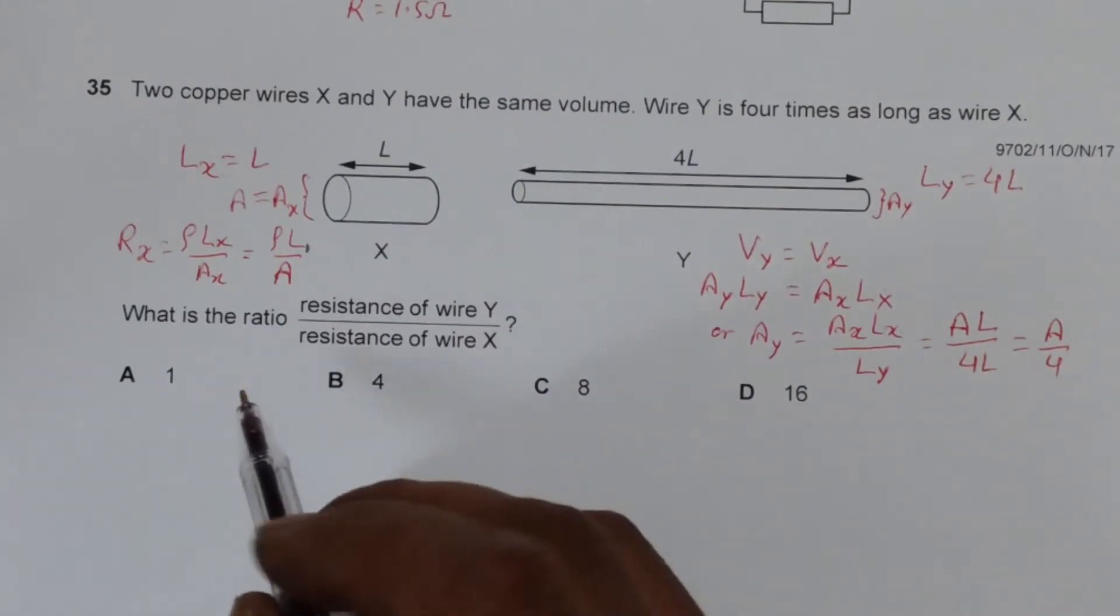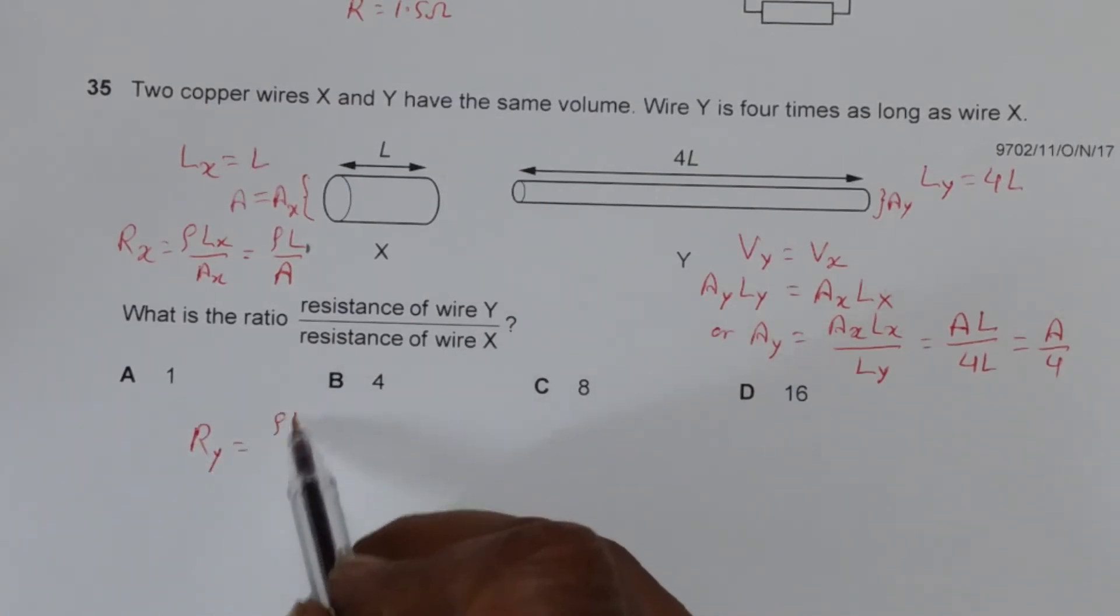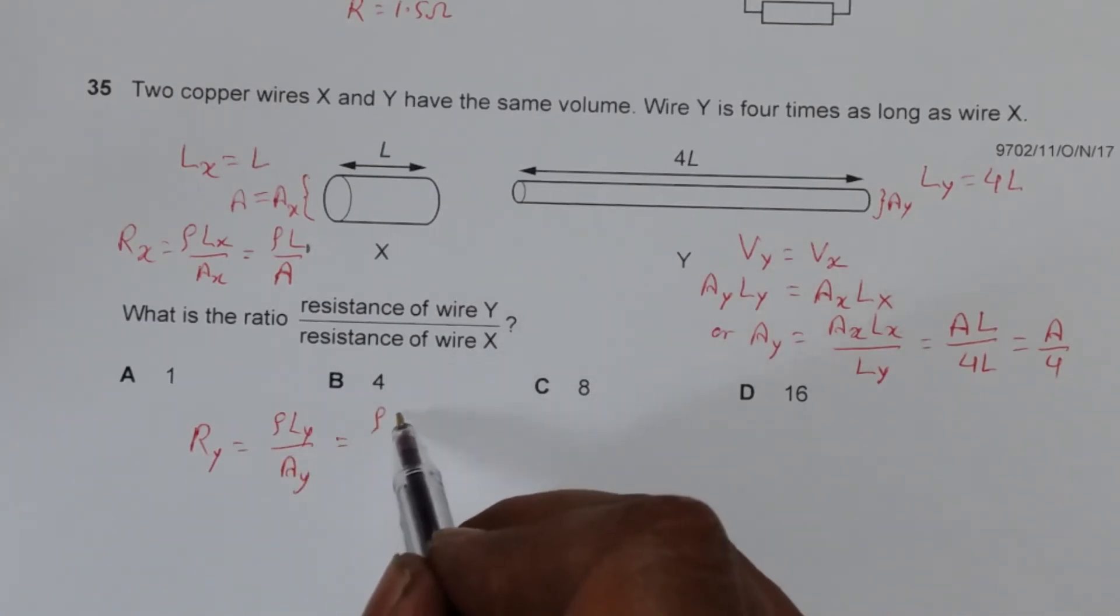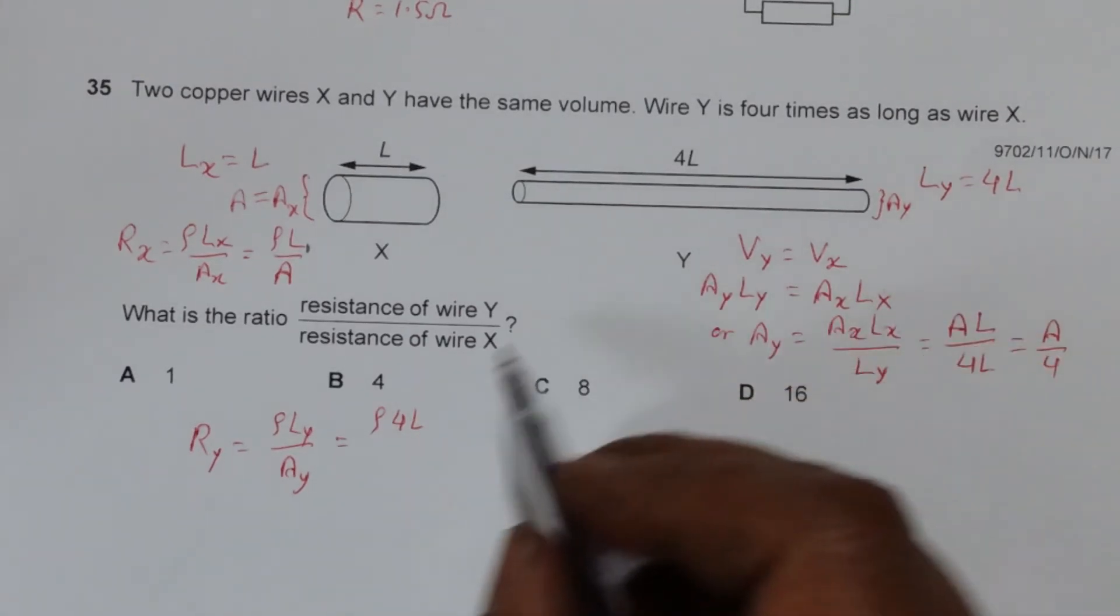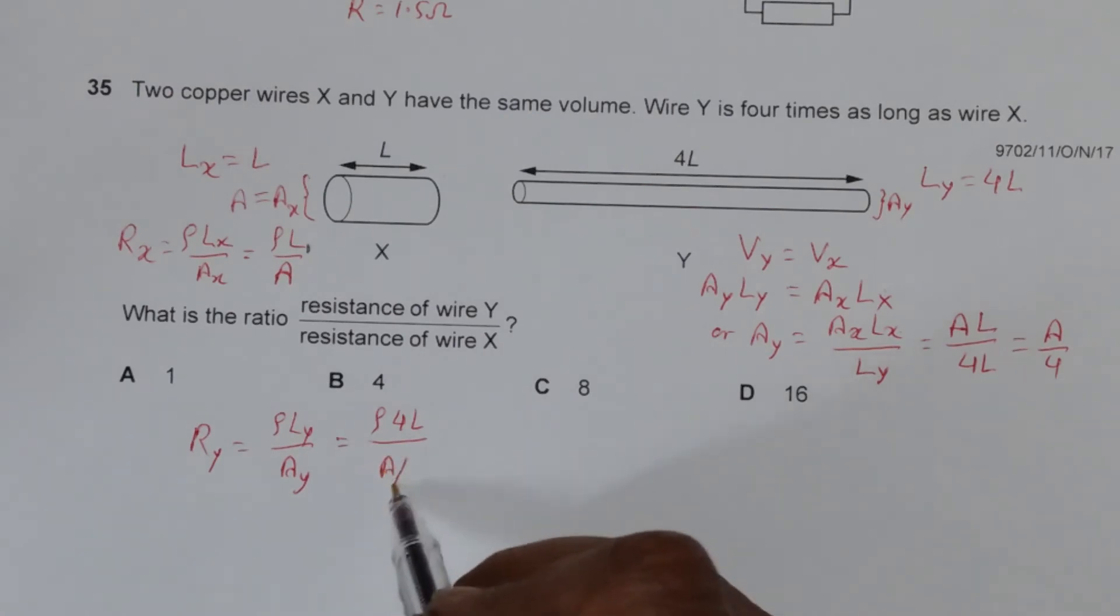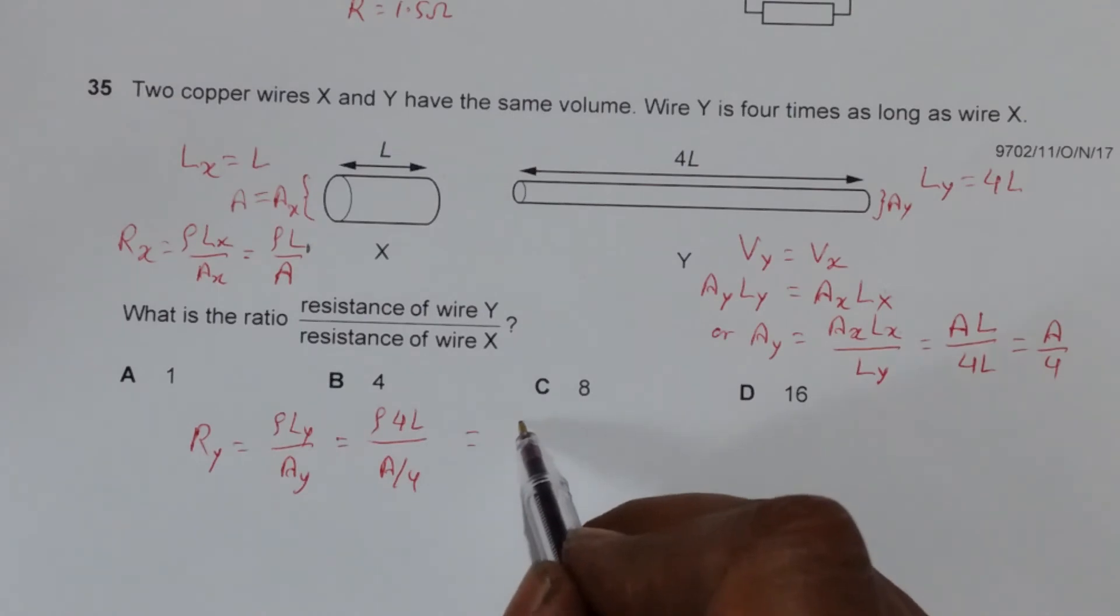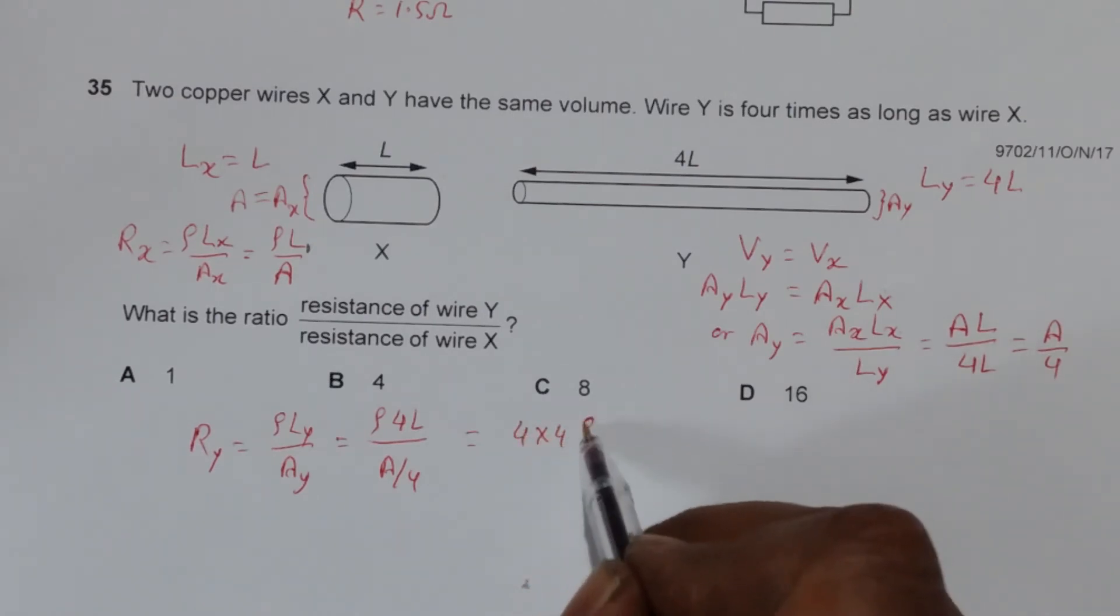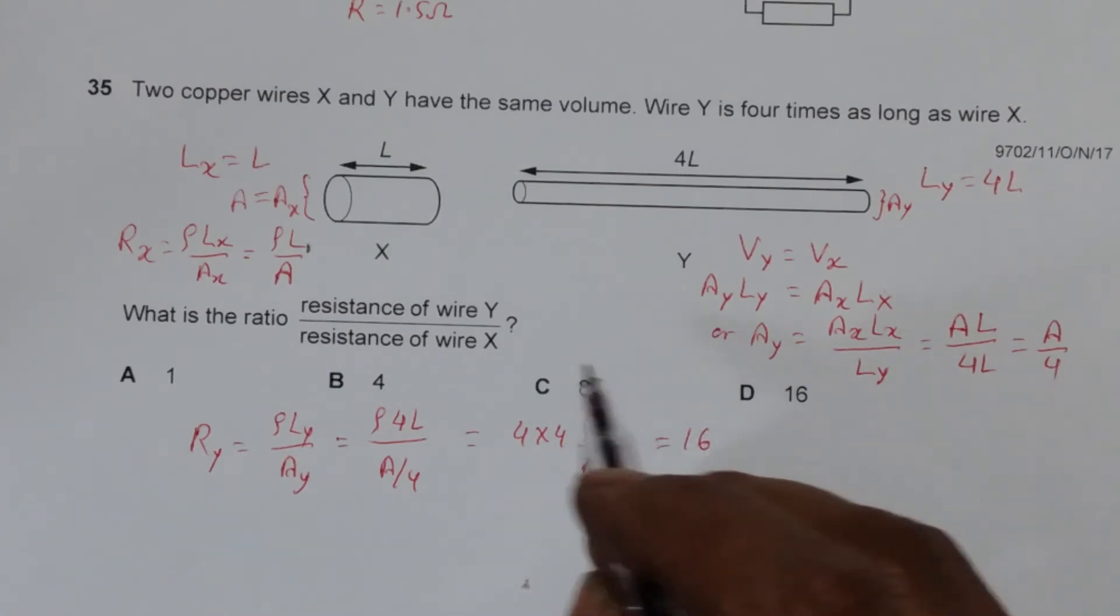Now let's find R_Y. It's equal to ρL_Y/A_Y, which gives us ρ × 4L divided by A/4, which will be equal to 4 × 4 × ρL/A equals 16ρL/A. And ρL/A is simply equal to R_X.